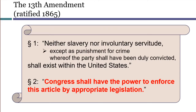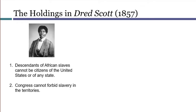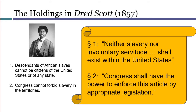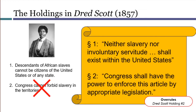In addition to the new right created by Section 1, the 13th Amendment also authorized Congress to pass anti-slavery legislation in Section 2. This was necessary in part because of the Dred Scott decision. The pro-slavery decision in Dred Scott had two principal holdings. First, the court held that African slaves and their descendants could not be citizens of the United States or of any state. Second, the court held that Congress could not forbid slavery in the territories, a decision that effectively overruled the Missouri Compromise of 1820, among other laws. Section 2 of the 13th Amendment responded directly to the second of the Dred Scott holdings, expressly affirming Congress's power to ban slavery in the territories, and indeed to ban it anywhere in the United States, including in states themselves.